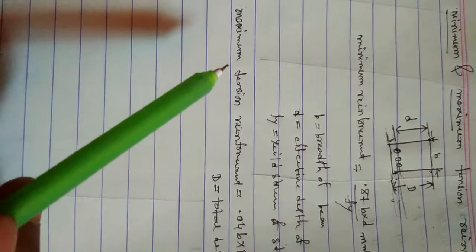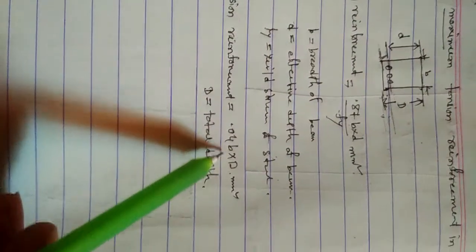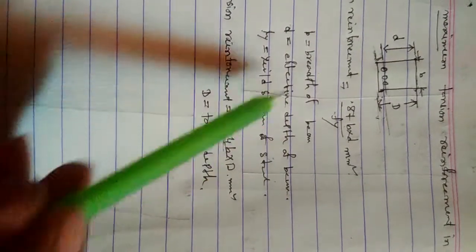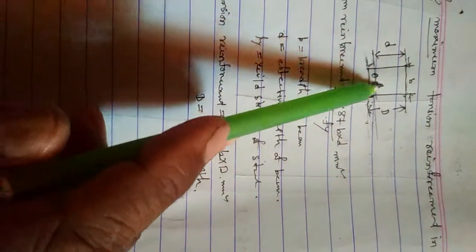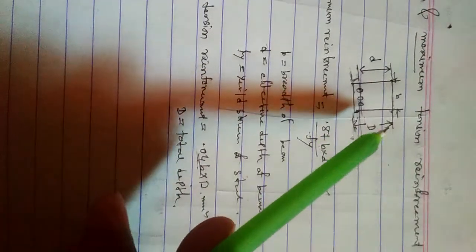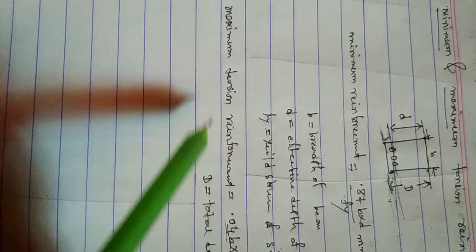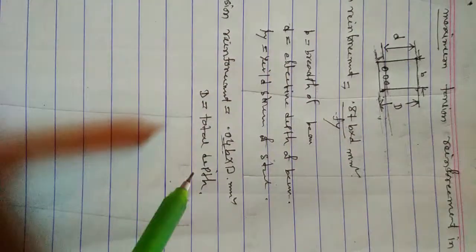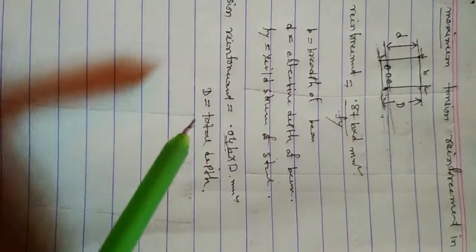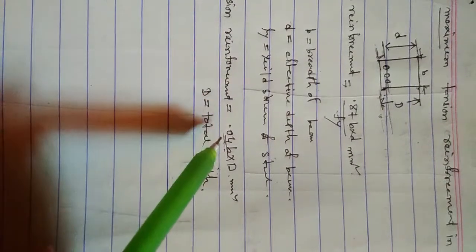The maximum reinforcement is given by 0.04 × b × D, where b is the width of the beam and D is the overall depth. So for maximum tensile reinforcement, we use the overall depth D, not the effective depth.